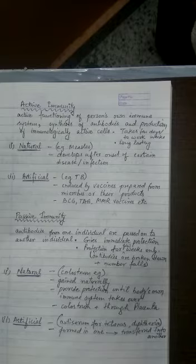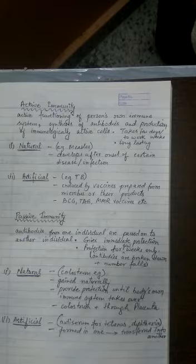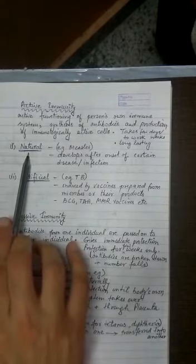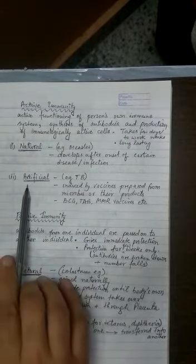This may take few days or few weeks to work and this is a long lasting type of immunity. It may develop because of infection, that is naturally. It may develop because of vaccination, that is artificially. One example I have given, for example in the case of measles.